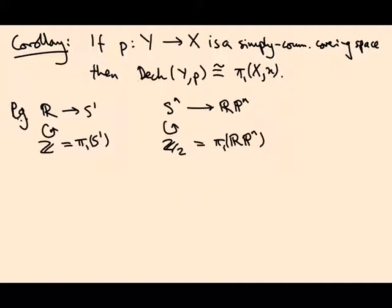I'll leave verifying these examples as an exercise, since it's not hard given the theorem we just proved. This is saying that a universal covering space has the biggest possible deck group—the entire fundamental group of X.